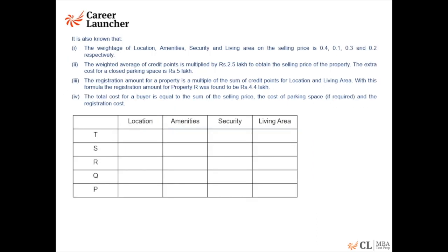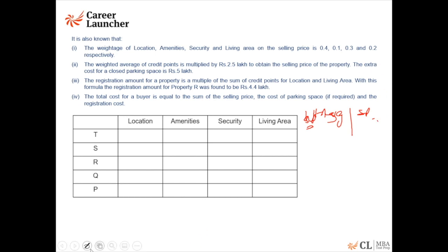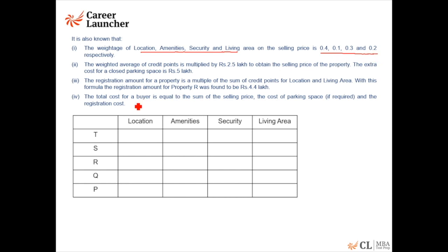We need to fill up a table to work through this. Once you have the weighted average points, you can get the selling price and other things. It is known that the weightage of location, immunity, security, and living area is 0.4, 0.1, 0.3, and 0.2 — that is 40%, 10%, 30%, and 20% respectively.